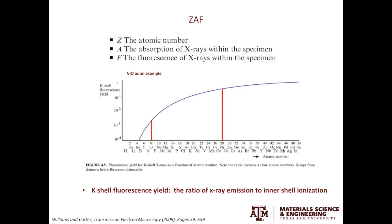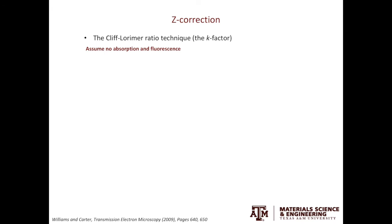To take the Z effect into account, there are two approaches. The first approach is called the Cliff-Lorimer ratio technique, also called the K-factor technique. Assuming the samples thin enough, so there's no significant amount of absorption and fluorescence. Looking at a binary system made from A and B, CA over CB is equal to KAB multiplied by IA over IB.